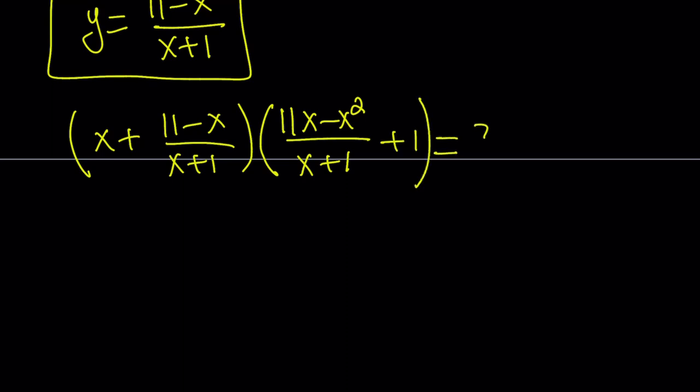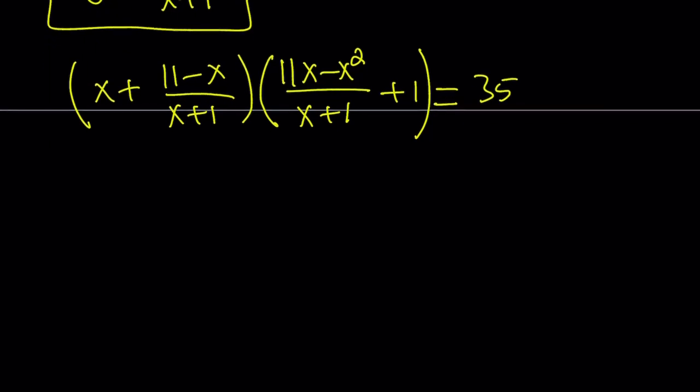And the product is equal to 35. So I'm going to go ahead and make a common denominator and simplify this expression. If you multiply x times x plus 1, you get x squared plus x.